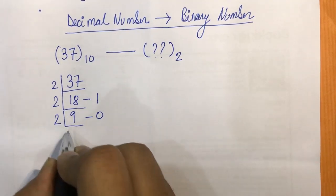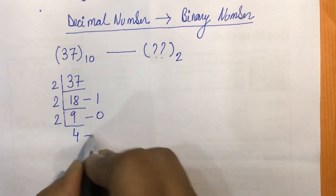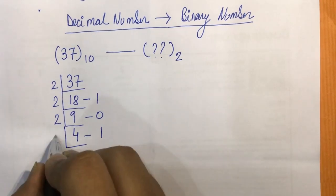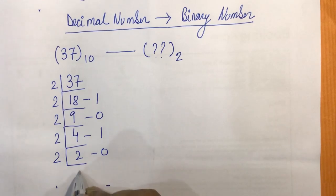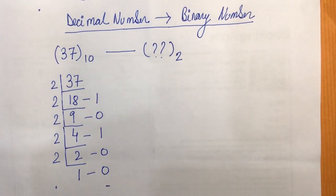Again, if we do the same thing, we'll get 4 with remainder 1, then 2 by 2 with remainder 0, and then final 1 with remainder 0. Now we can see that this thing has already been converted.